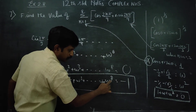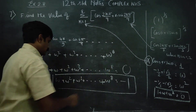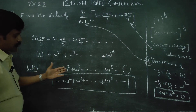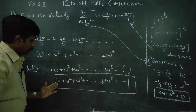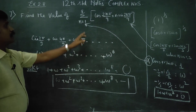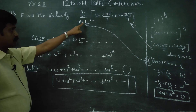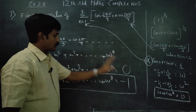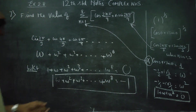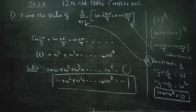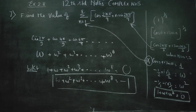We know that 1 plus omega plus omega square equals 0. Moving 1 to the right side gives us the result. This confirms that the sum for the 9th root of unity — omega plus omega square plus dot dot dot plus omega power 8 — equals minus 1. This is the rule of the 9th root of unity. Thank you.